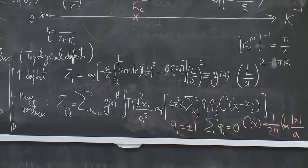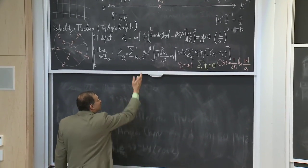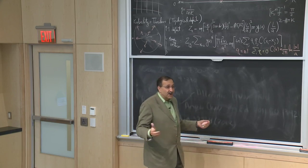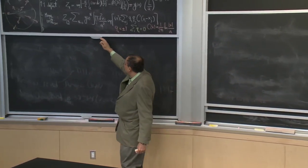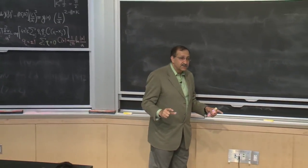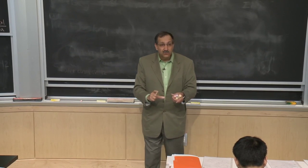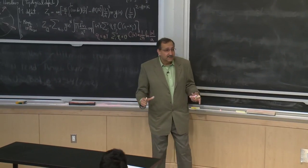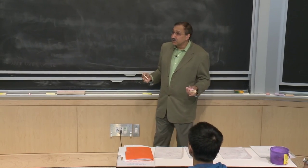Our task is to calculate properties encoded in this partition function — a grand canonical system of charges that can appear and disappear. At low temperatures, essentially all we have are small dipoles. As temperature increases, the two monopoles making a dipole can fluctuate further from each other, and eventually they will all be mixed together in a picture of a plasma of plus and minus charges.